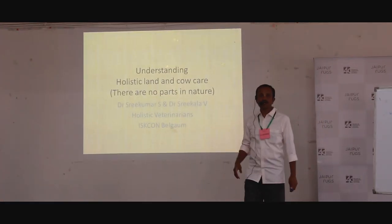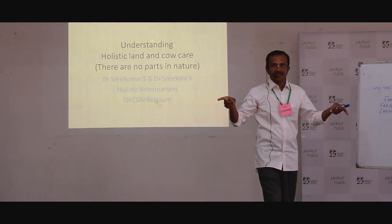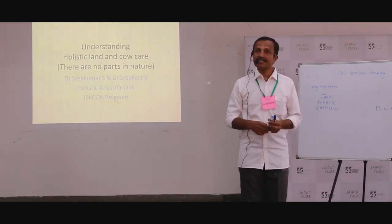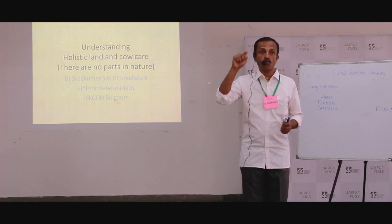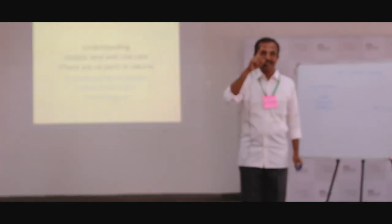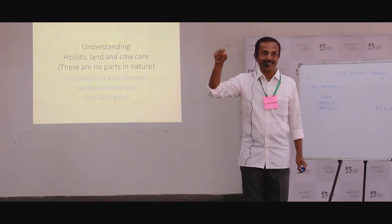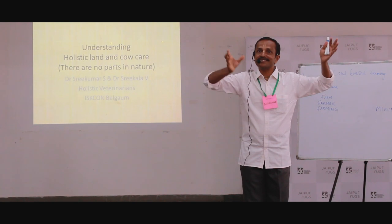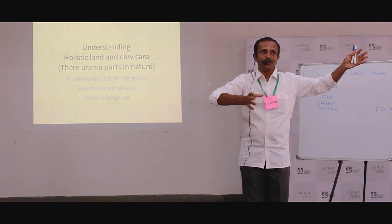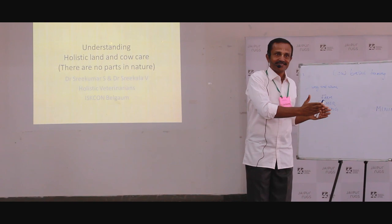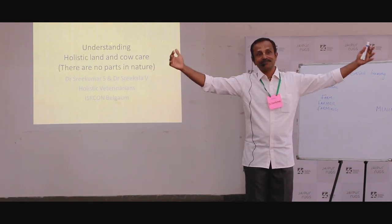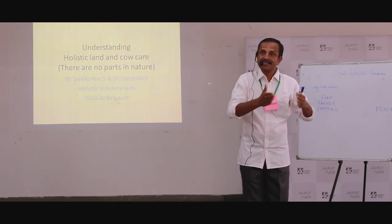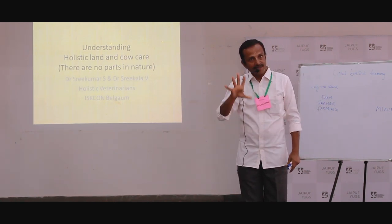Understanding holistic land and cow care — in brackets it is written: there are no parts in nature. So holistic doesn't mean H-O-L-Y. Holistic means W-H-O-L-E, whole. You are considering the whole; there are no parts in nature. You cannot manage nature in parts. It's all inclusive, everything is emanating from Him. So it is whole. You cannot manage nature in parts — that is the main principle.